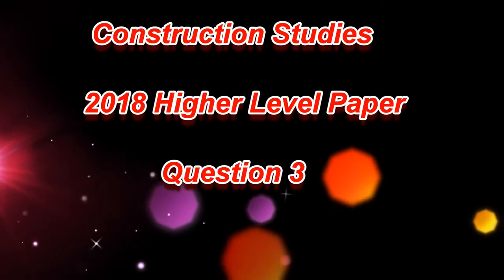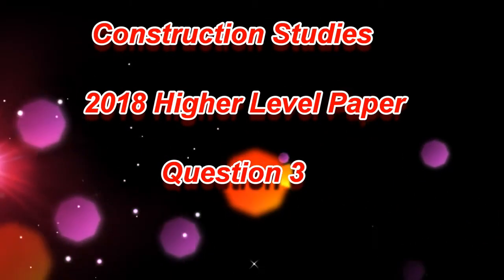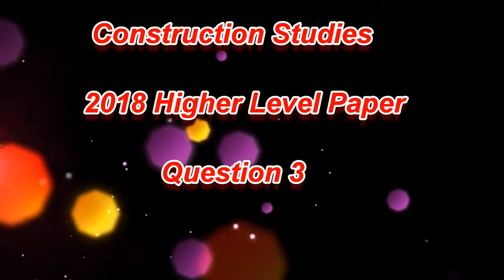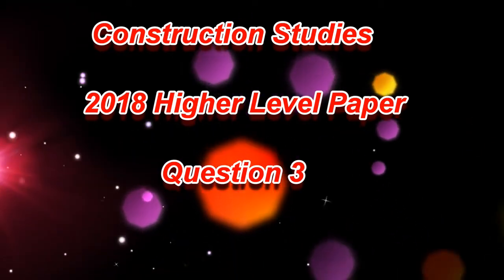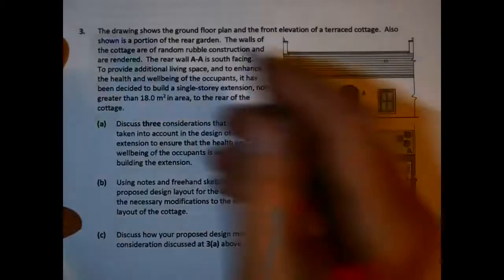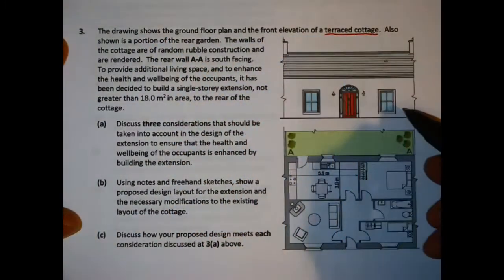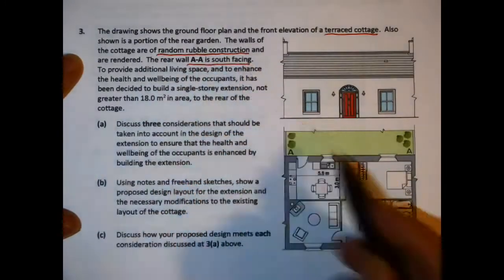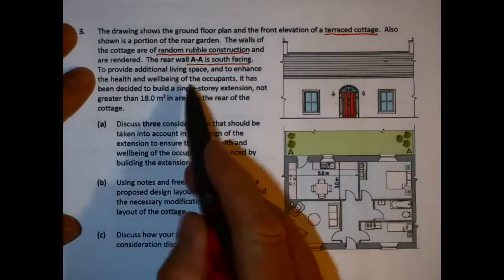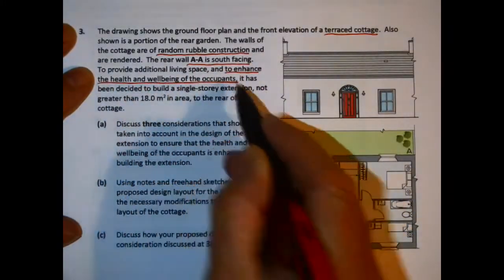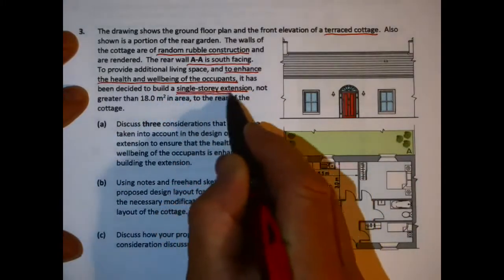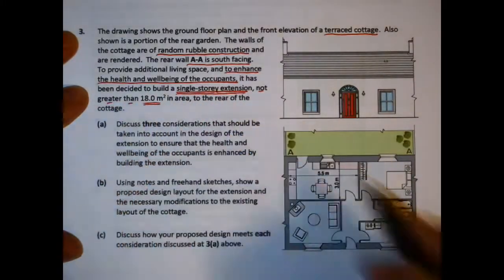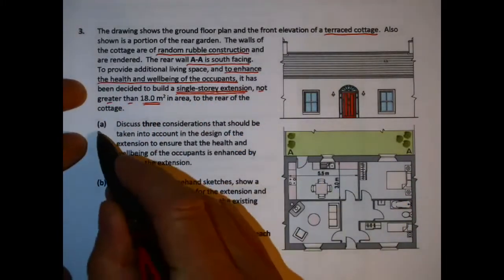In this video I'm going to take a look at the 2018 higher level paper in construction studies, in particular question 3, and offer a proposed solution to the question. Picking out the key points of the question: it's a terrace cottage with a rear garden, the garden is south facing, and we're told to design a single story extension to enhance the health and well-being of the occupants and not to go over 18 meters square.